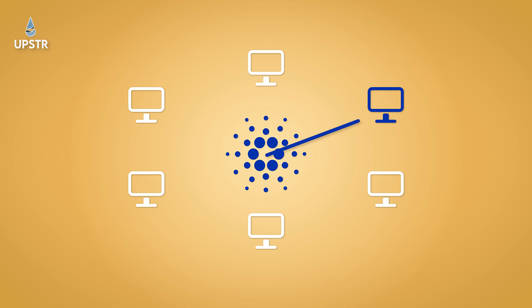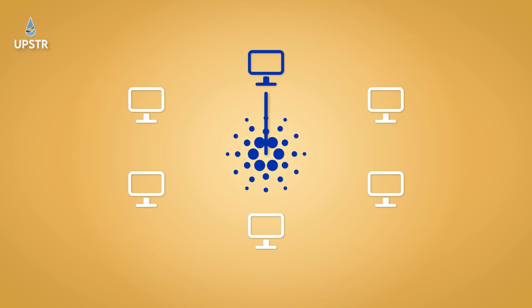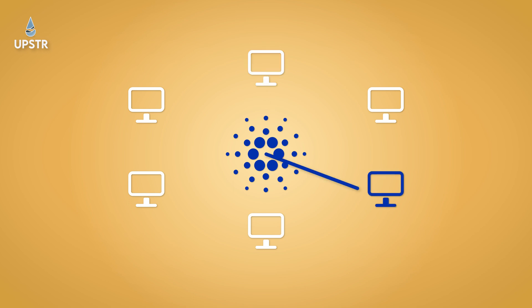Basically, there are over 3,000 nodes — small computers around the world — which have the chance to confirm transactions on the Cardano blockchain in 20-second slots. The node is a little computer that runs the network, and the pool or staking pool is where people delegate their ADA to support the node.